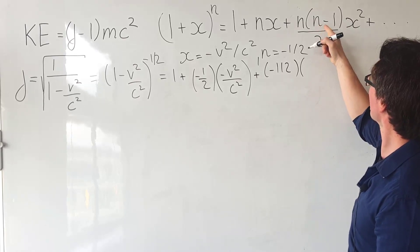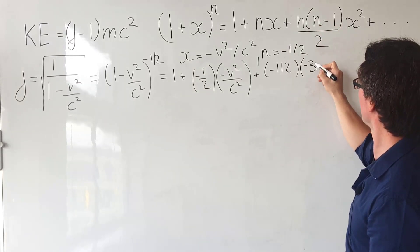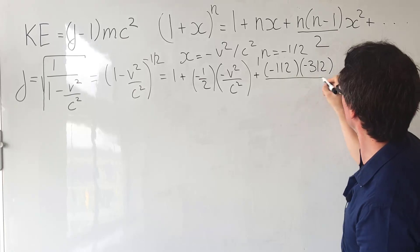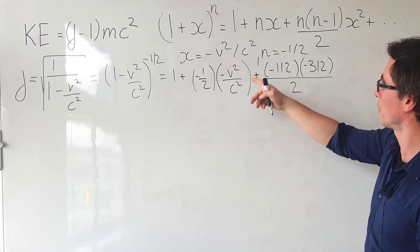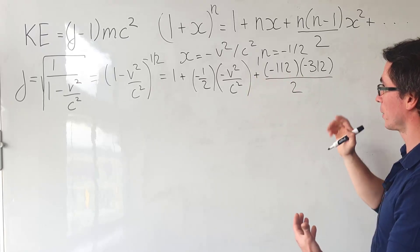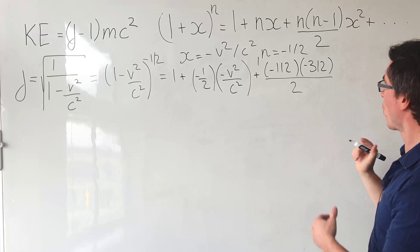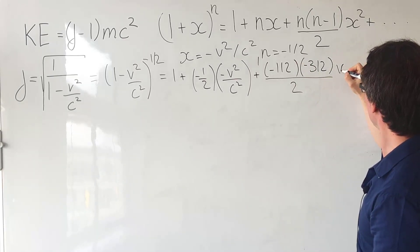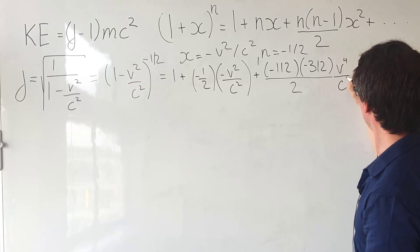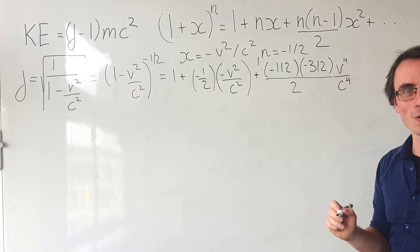And then we're going to add plus n which is equal to minus a half times minus a half minus one. That's minus three halves and then we're going to divide by two and we're going to multiply by x squared which is going to be negative v squared over c squared squared. The negative sign will turn to a plus meaning that what we're going to get is v to the power of four divided by c to the power of four.